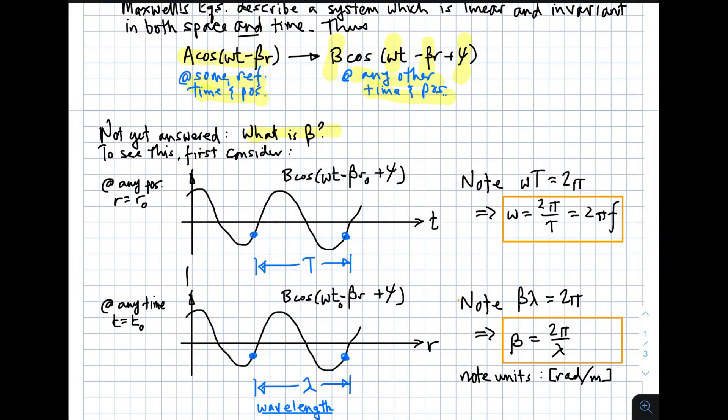Not yet answered, what is this thing beta? We see it's somehow similar to omega, the angular frequency, the thing that describes frequency, and yet somehow different. It applies to distance, positions in space. So to see this, first consider the time domain aspect. We'll freeze a position, take a position in space r equals r naught, and we'll plot the wave form. The wave form looks like this at any one position in space. It varies with time sinusoidally, and the separation between two points having the same phase is the period, big T. And omega times T should be 2 pi, that's one period. In solving for omega, you get 2 pi over T, or 2 pi times F, since F is 1 over T.